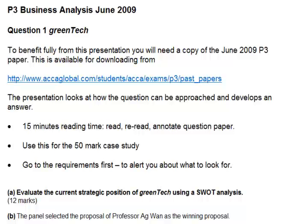Remember you have 15 minutes reading time. Read, re-read, and annotate the question paper in that time. Use that time for the 50-mark case study. Go to the requirements first to alert you about what to look for in the question. Part A of the requirements says evaluate the current strategic position of Green Tech using a SWOT analysis. There are 12 marks for that. So if there are 12 marks and we are doing a SWOT analysis, that should be 3 items each for strengths, weaknesses, opportunities, and threats. We don't just want to put down a one-word point — you want to make a sentence for each of them. This is what we'll concentrate on to start with.